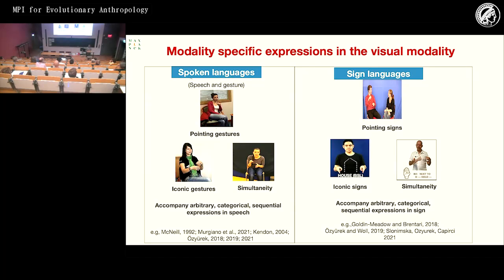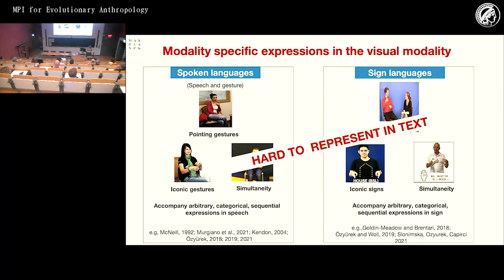Simultaneity is a very common form in sign languages, especially when expressing event components, motion events, and spatial language. These features are hard to represent in text, which is linear and sequential, so we lose many aspects of human language that we think are peripheral but are actually central. Because we cannot represent them in text, we tend to ignore them in our language and grammars.